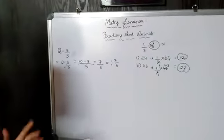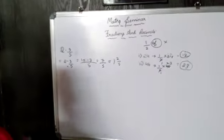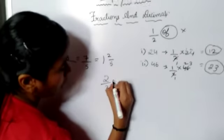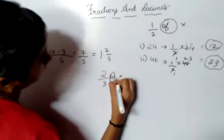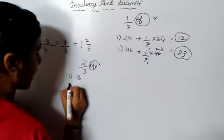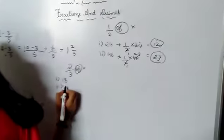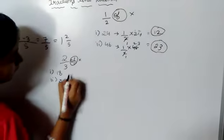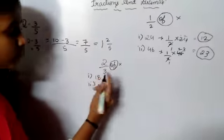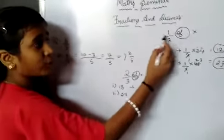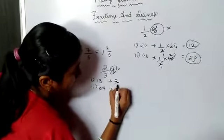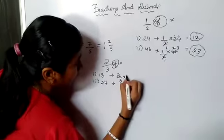For another question, the problem is 2 upon 3 of some numbers. 'Of' means nothing but 'into.' The first number is 18 and the second number is 27. Same method — but instead of 1 upon 2, we take 2 upon 3. So 2 upon 3 into 18.